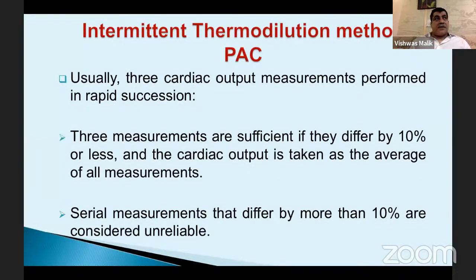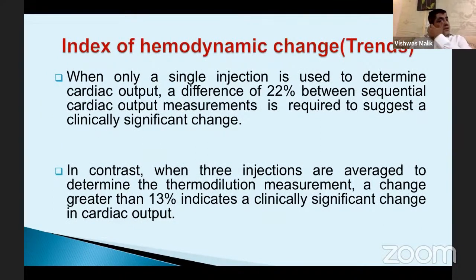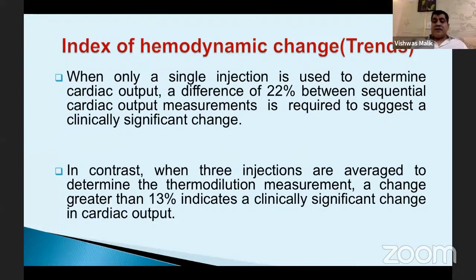Usually three cardiac output measurements are performed in rapid succession. If the difference between measurements is less than 10%, the values are reliable; if more than 10%, measurements are not reliable. To identify a significant hemodynamic change: if only a single value is taken, more than 22% change is significant; if an average of three values is taken, a difference of 13% is considered a significant hemodynamic change.